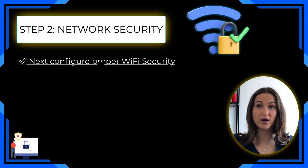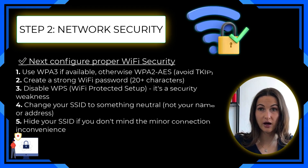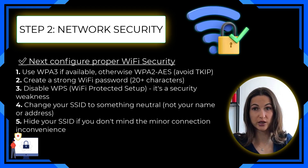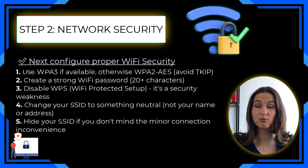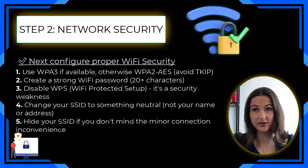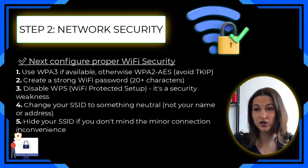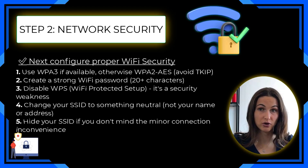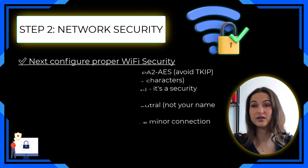Next, configure proper Wi-Fi security. Use WPA3 if available, otherwise WPA2. Create a strong Wi-Fi password — 20 or more characters. Disable Wi-Fi Protected Setup (WPS) as it's a security weakness. Change your SSID to something neutral — not your name or address — and hide your SSID if you don't mind the minor connection inconvenience.